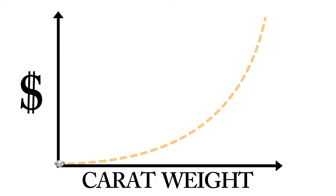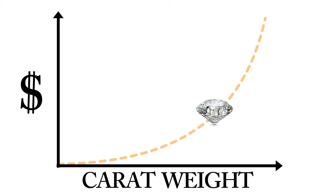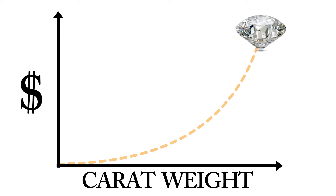As diamonds grow larger in the earth naturally, they get exponentially more rare and exponentially more expensive. A lot of people think that if a one carat diamond is $5,000, then a two carat diamond should be $10,000. That's actually not the case. Diamonds are exponentially more rare and expensive, so a two carat diamond could be $15,000 or $20,000 for the same color, clarity, and cut.